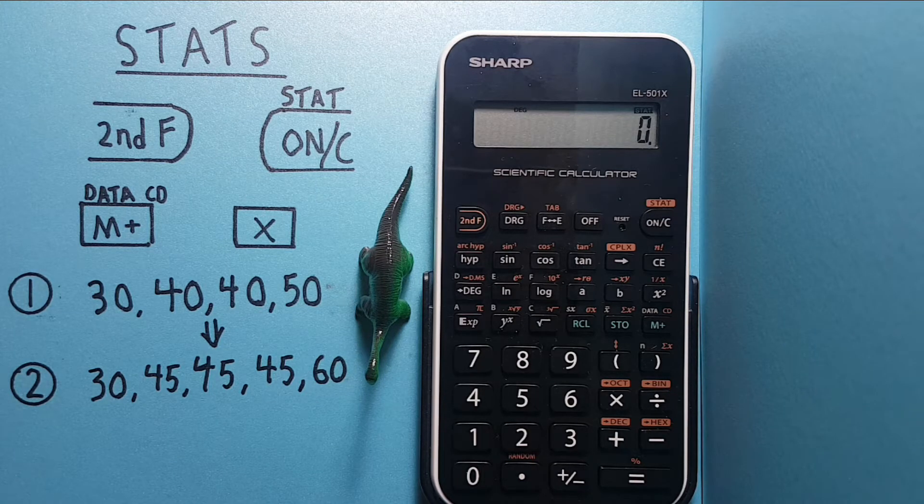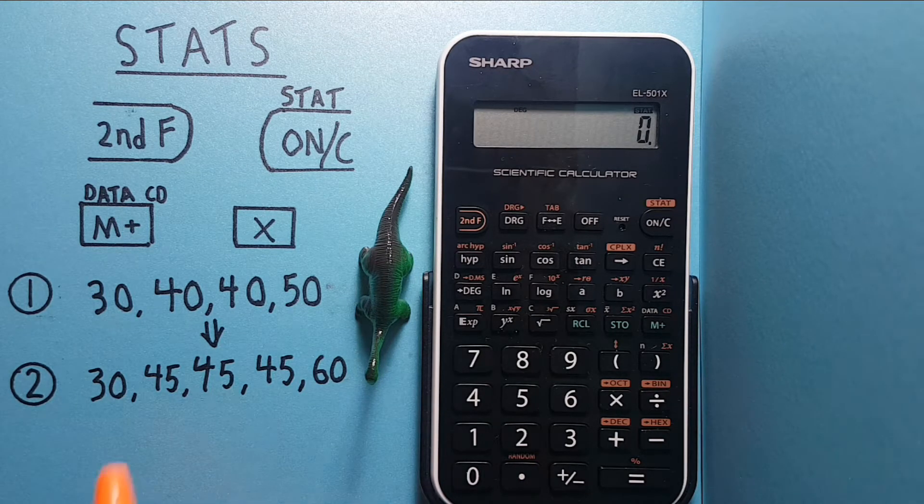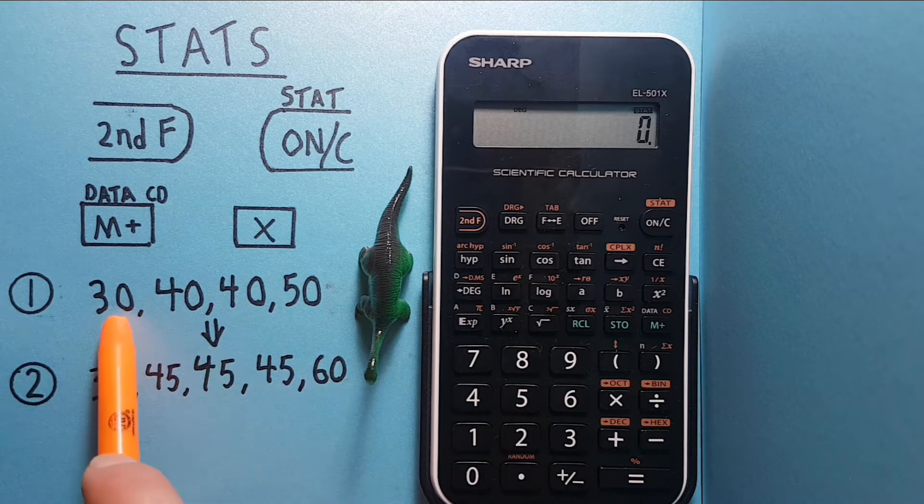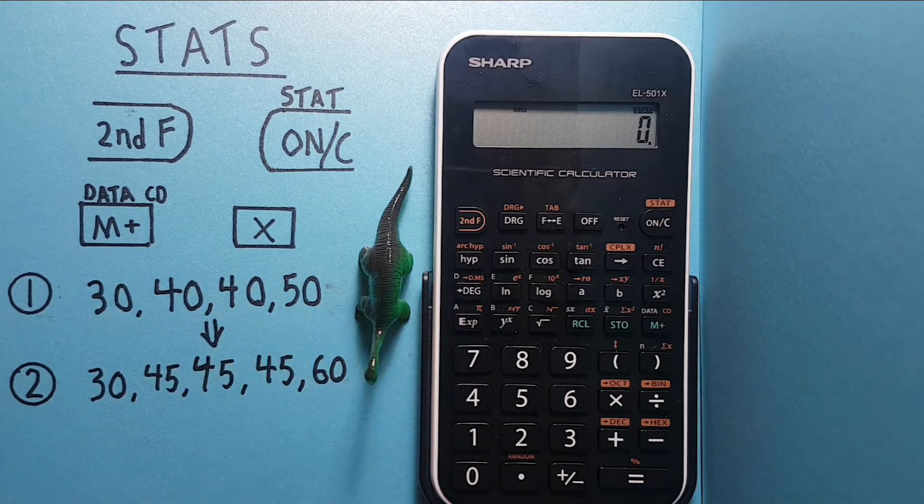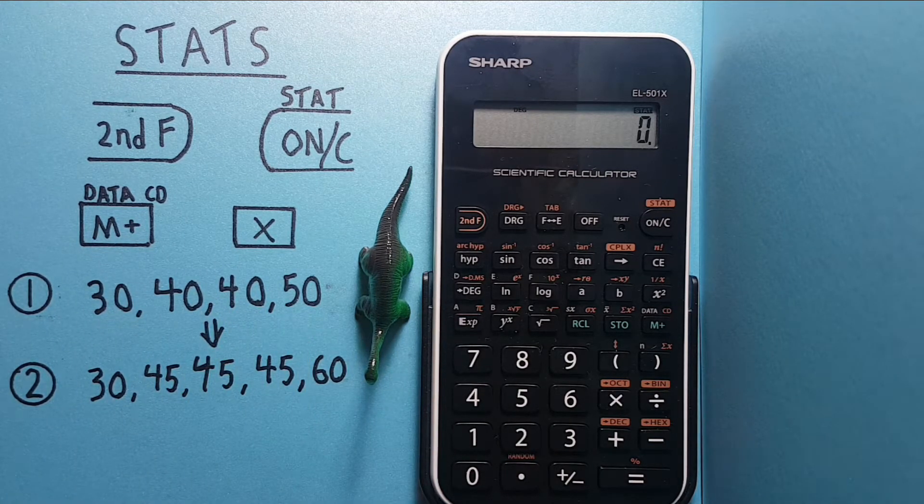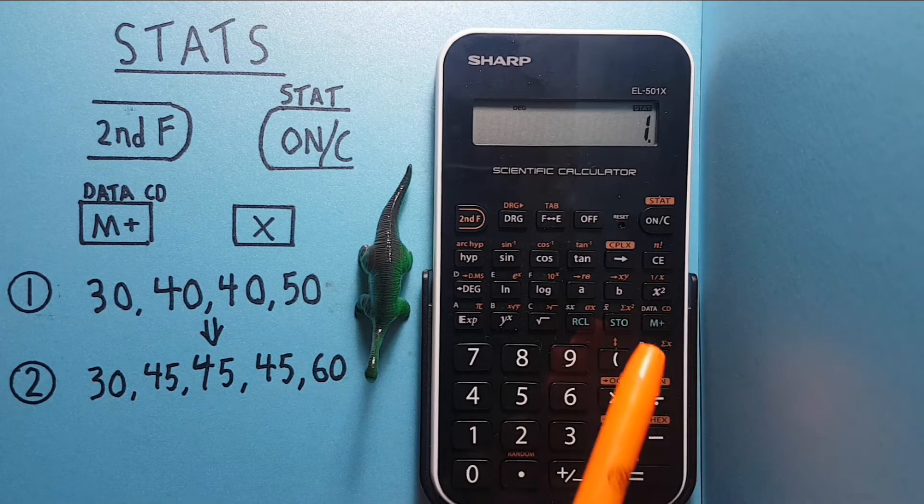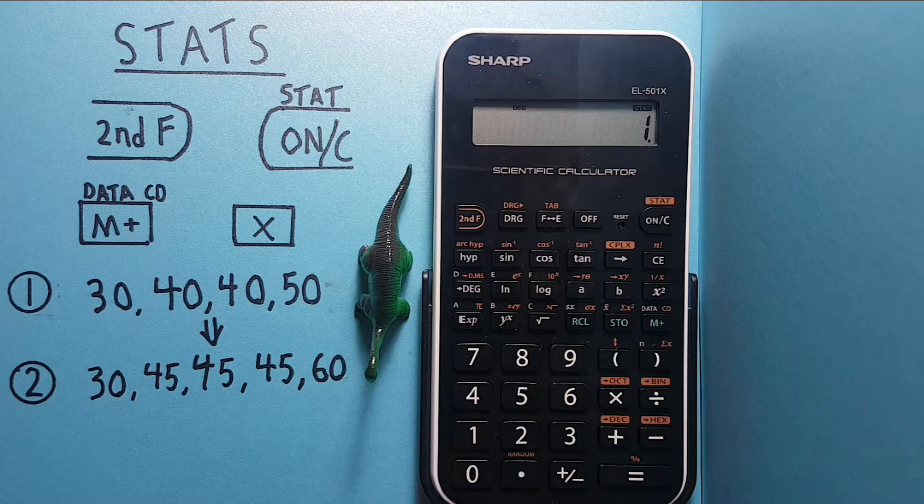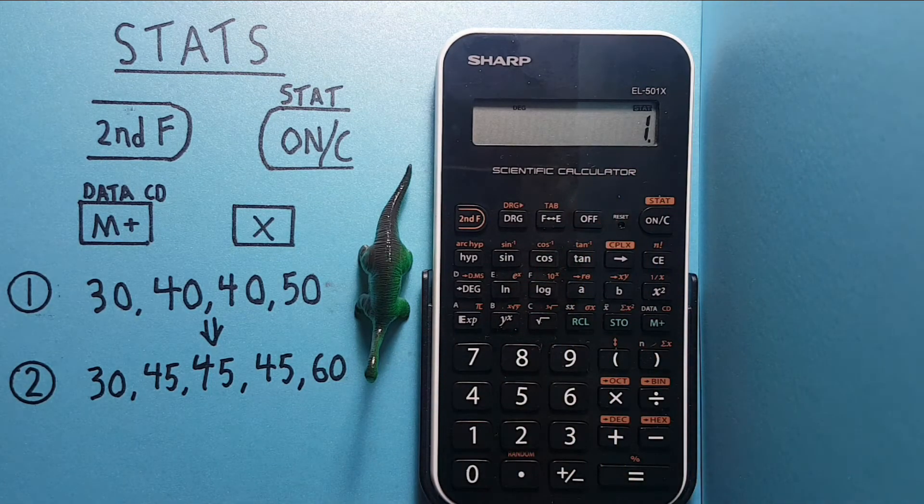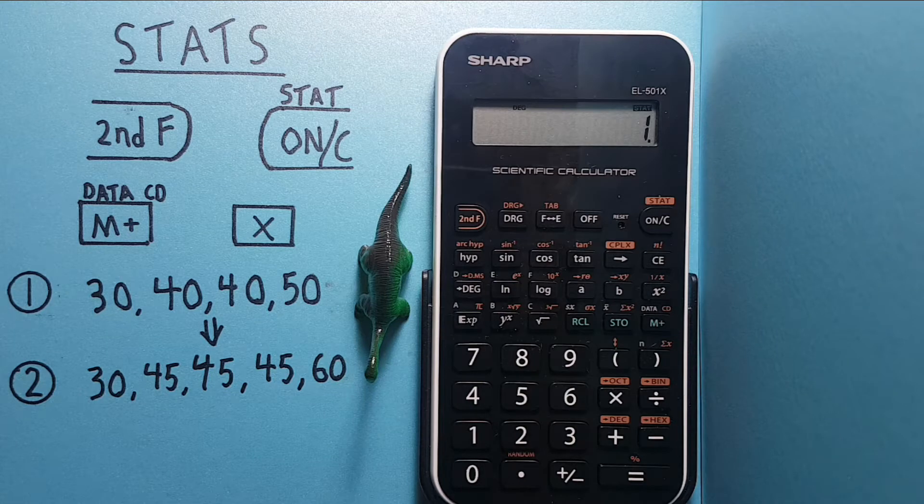Now we need to enter our data set. Let's say this is our starting data set: 30, 40, 40, 50. You enter this by entering the number and then pressing the M plus key. After the first entry, one will appear on the screen. This tells us we have one number in the data set.